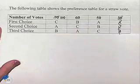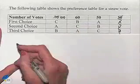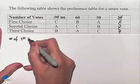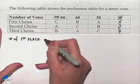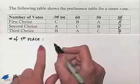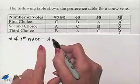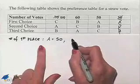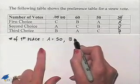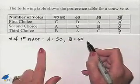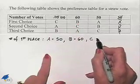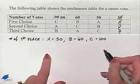We begin by looking at the number of first place votes. We'll start with candidate A. Candidate A is going to have 50 first place votes. Candidate B would end up having 60 first place votes from our second column, and candidate C is going to have 100 first place votes.